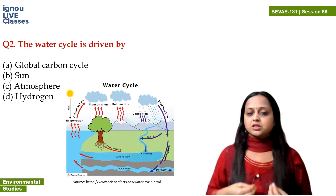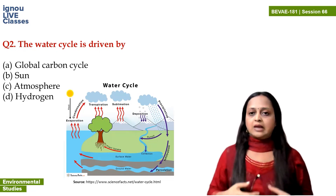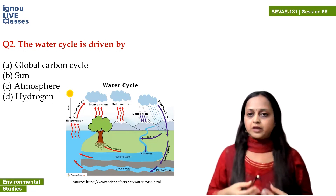Precipitation basically means water falling on Earth. It can be in liquid or solid form — hail, snow, sleet, or rainfall. These are all types of precipitation.